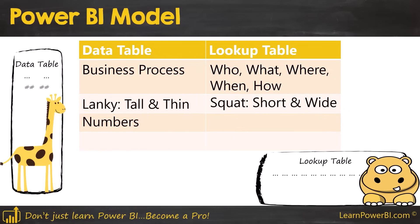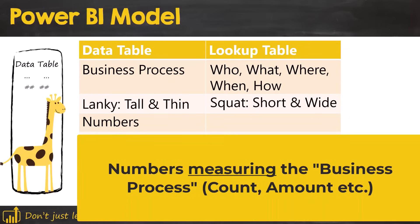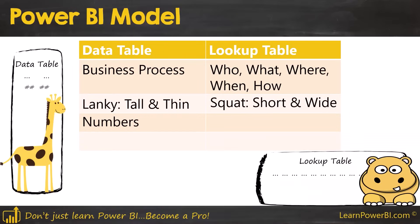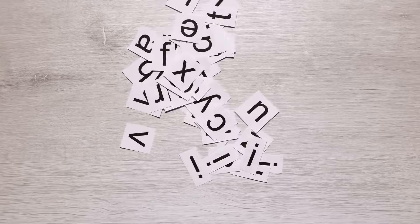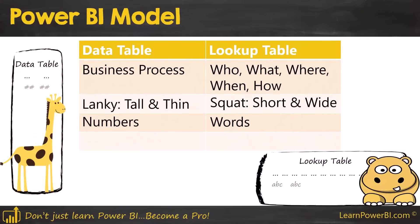Data tables are rich in numbers. When you look at a data table, you should see a lot of numbers — numbers capturing information about the business process, and numbers which can also be keys connecting it to lookup tables. As a general rule, data tables are number-heavy. On the other hand, lookup tables are word-heavy. There should be a lot of rich text attributes, because that's what helps us slice and dice and analyze data — that's what the lookup tables bring us.